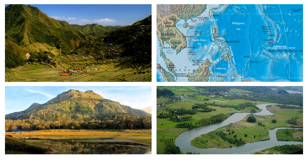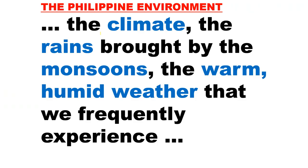Here we have pictures of different landforms and bodies of water that are located in the Philippines. In our country, we have mountains, we also have valleys, we have rivers, and we have seas. The climate, the rains brought by the monsoons, the warm, humid weather that we frequently experience are also part of our Philippine environment.